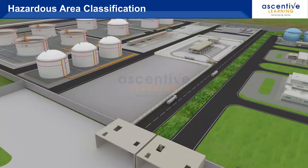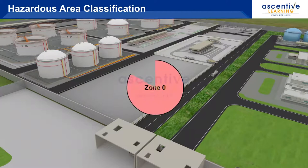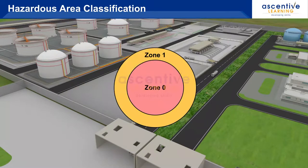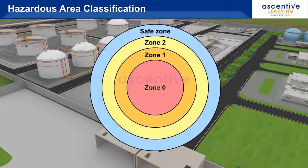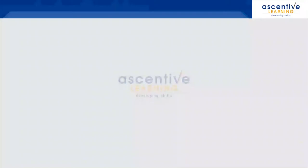Hazardous areas are classified into three different zones — Zone 0, Zone 1 and Zone 2 — based on an assessment of the frequency of occurrence and duration of an explosive gas atmosphere.